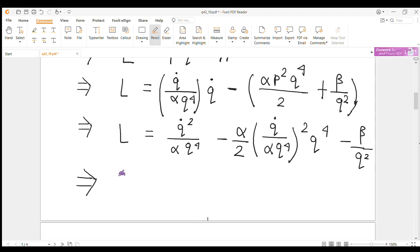So the Lagrangian is equal to q dot squared by alpha q to the power 4 minus q dot squared by 2 alpha q to the power 4 minus beta by q squared.